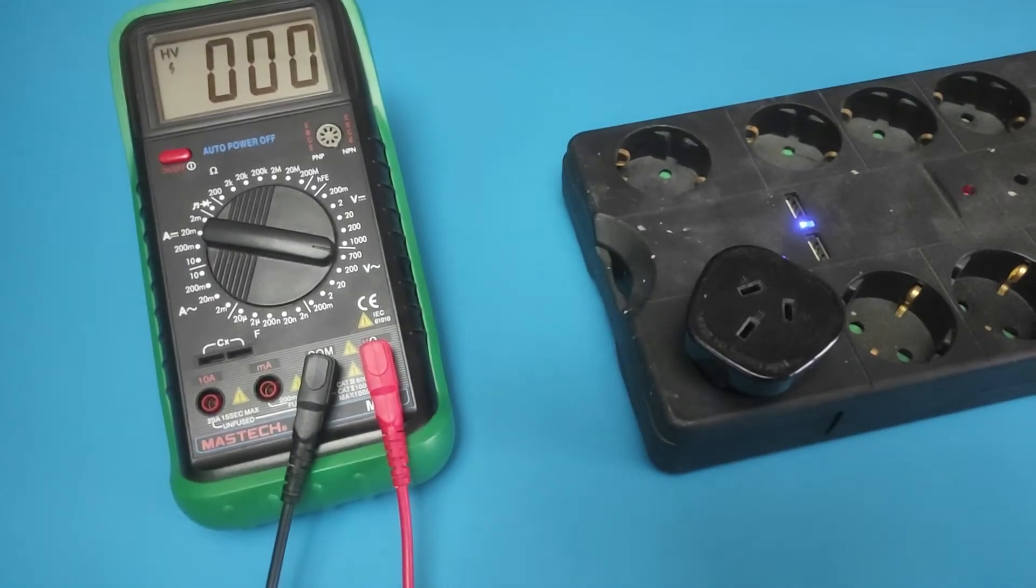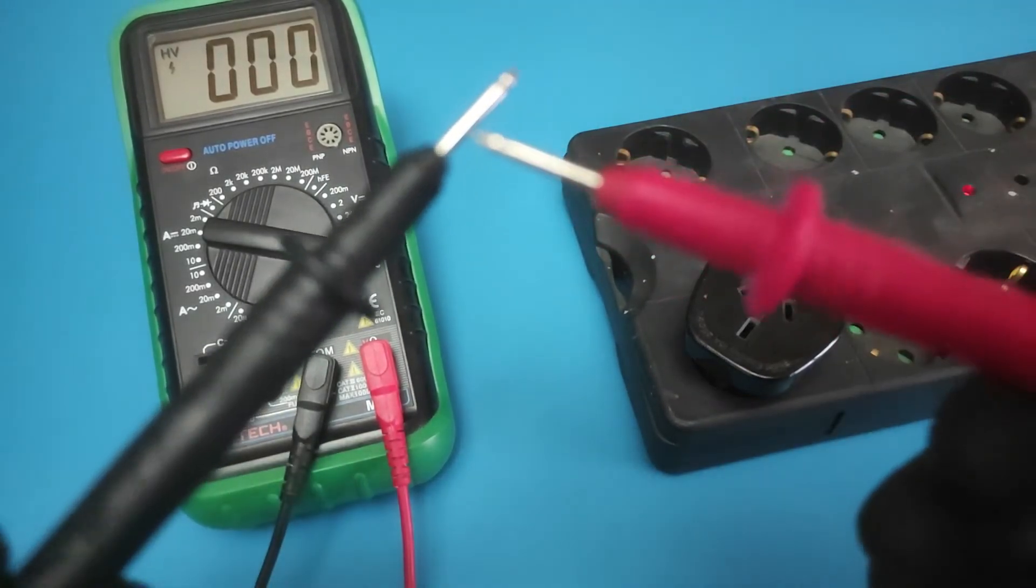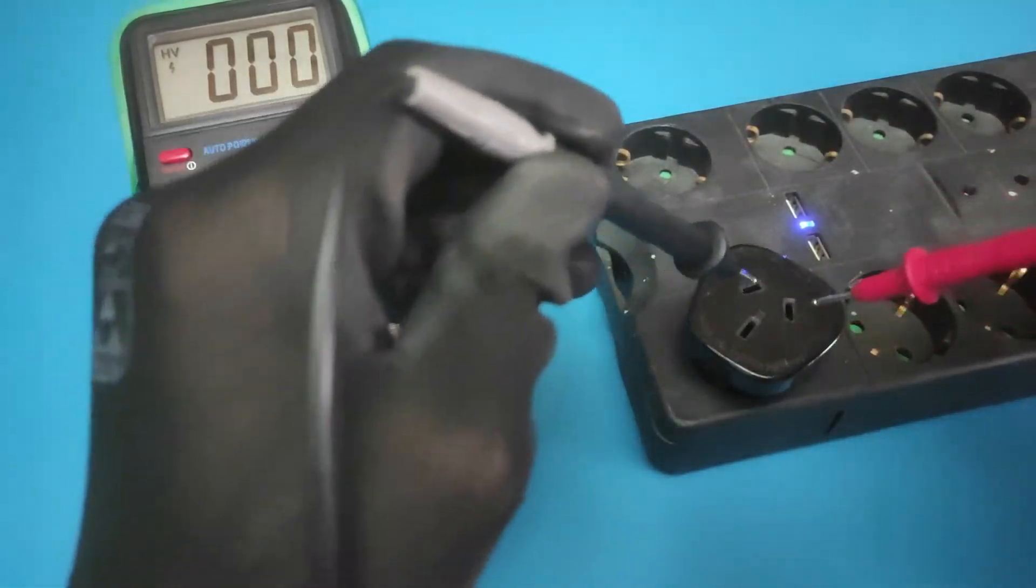Simply place your red and black leads into each of the outlet's matching slots to get an accurate diagnosis. Make contact with the metal parts inside the slots.